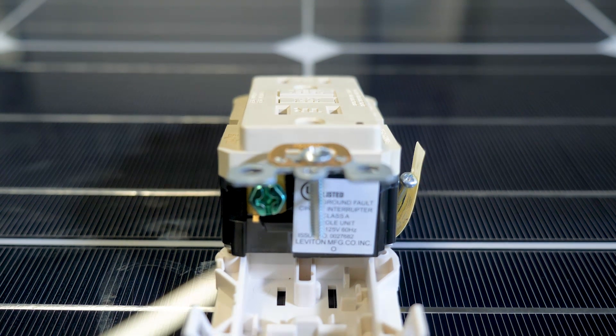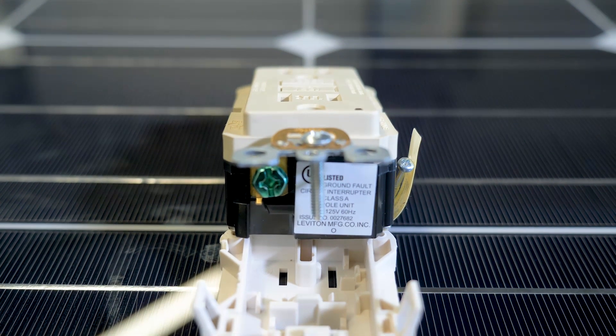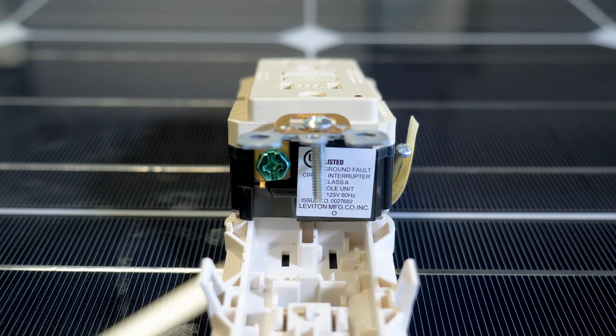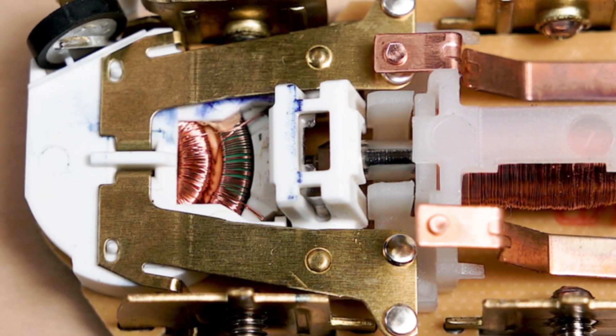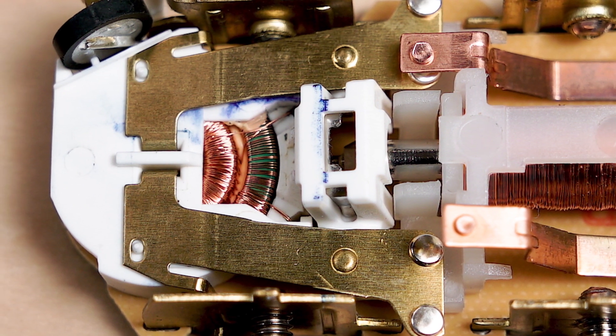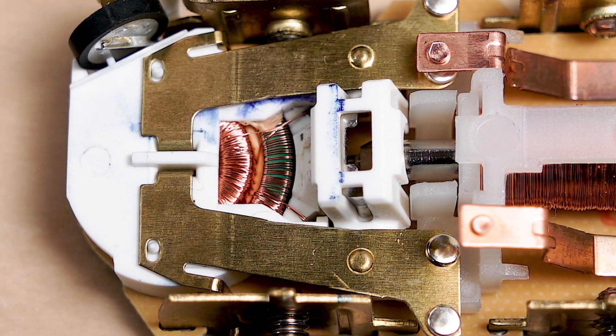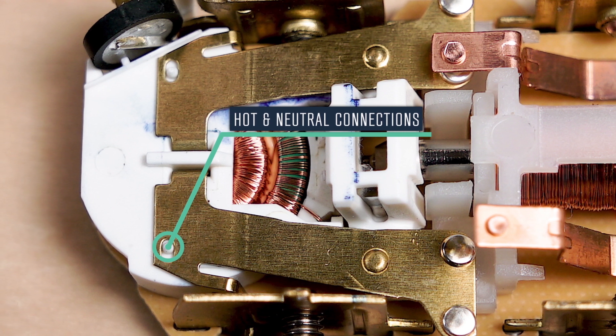But you can envision scenarios in which current flows from hot to load then through ground and then to neutral. There would potentially be no difference in the line and neutral current. So the GFCI circuit must sense this fault current with the operating assumption that the hot and neutral currents are the same.